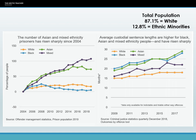This first graph looks at prison population — specifically the rates of incarceration for different ethnic groups from 2004 to 2018. For whites, it's pretty settled, staying roughly the same. For black groups, there was a peak in 2008 and then it dropped off and became fairly steady. But both Asian and mixed ethnicity groups have seen a sharp increase in incarceration since 2004.